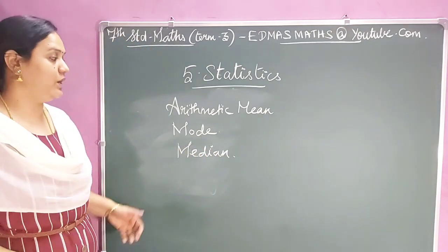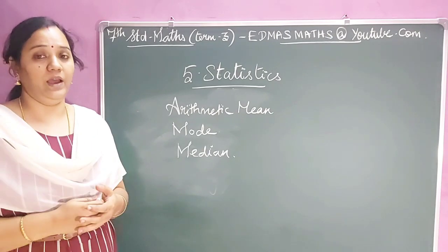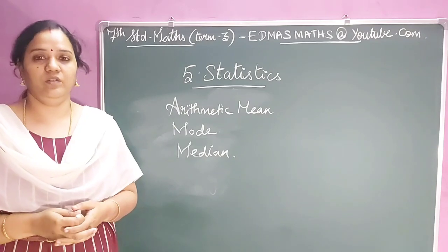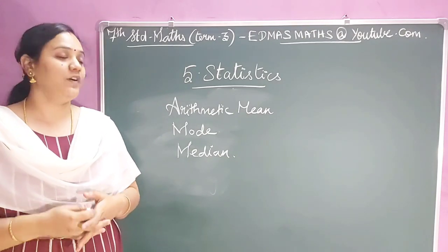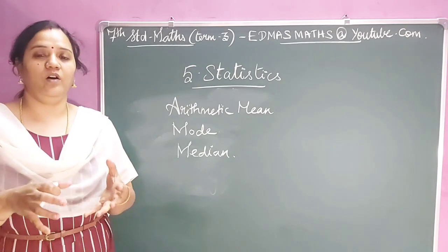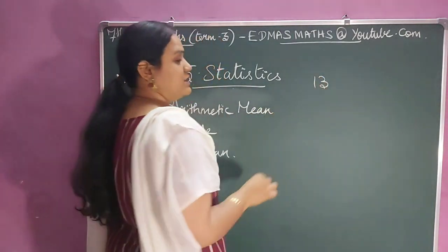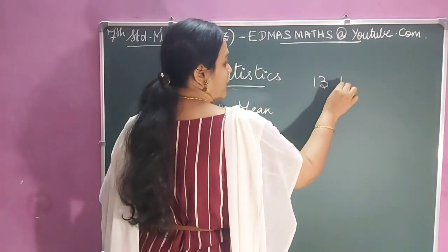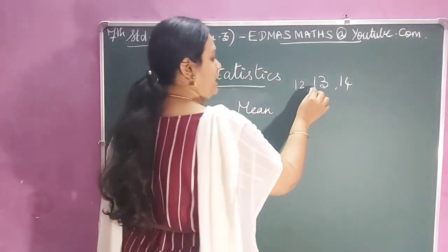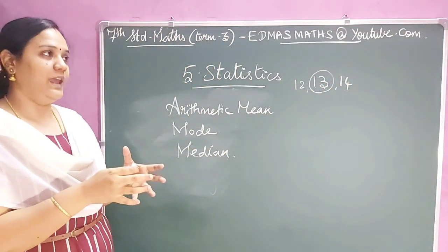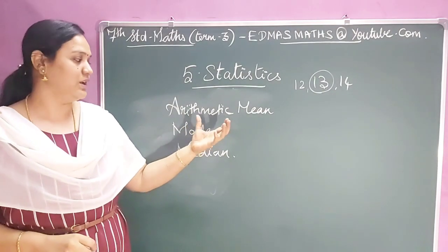Let me give you a simple introduction for each topic now. Arithmetic mean is nothing but the average. For example, I have collected the age of students in class 7, from each and every child in 7th standard, all sections. Finally, I came to the conclusion that the students of 7th standard have an average age of 13. But some students may be 14 or 12 — most students are 13, and the average age is 13. That is our average, nothing but arithmetic mean. Sometimes we can simply say this as mean.